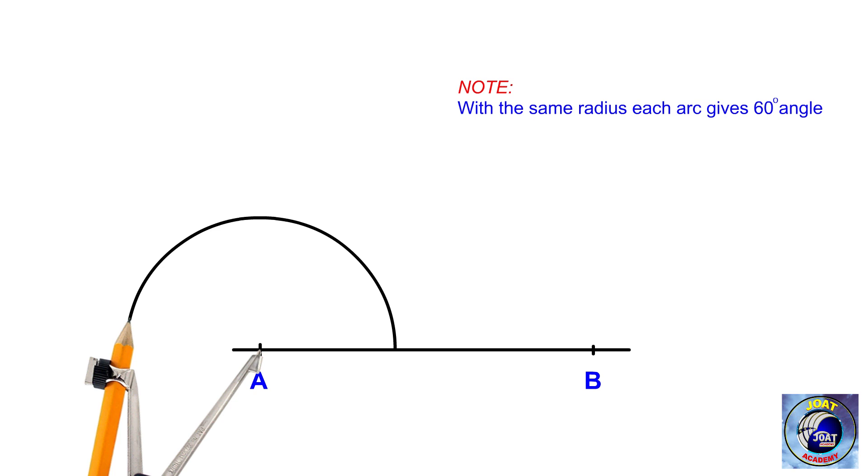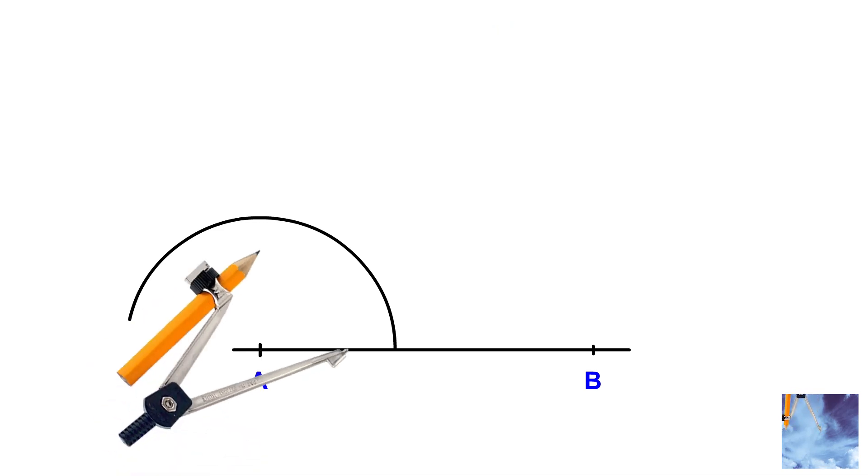Using the same radius, mark on the arc to create two 60 degree angles. Mark two points to indicate two 60 degree angles.